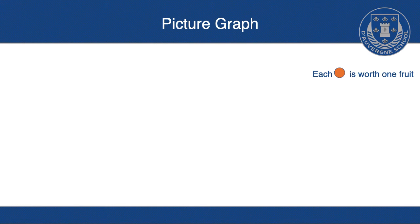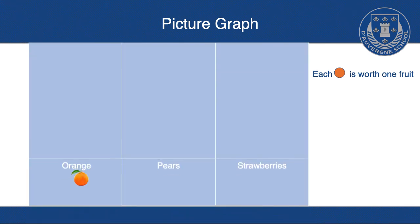We can also use a picture graph. A picture graph goes vertical, so the counters go up. There are eight counters to show eight oranges, six pears, and ten strawberries. Again, I've started in the same place to make it really clear. What you have to look out for each time is the key.